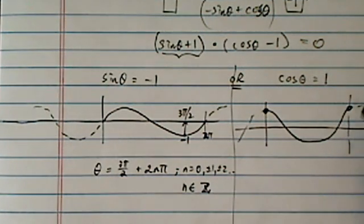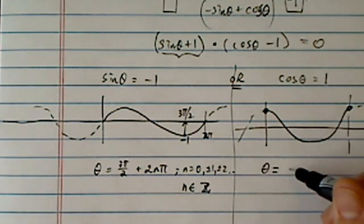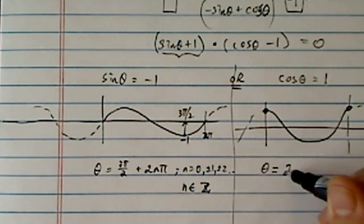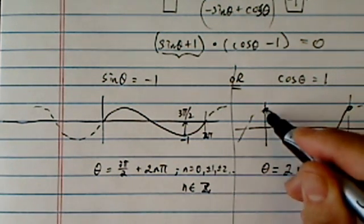Actually, they're the same one, in that if my theta is equal to two n pi, n can be equal to zero, and that's this point here.